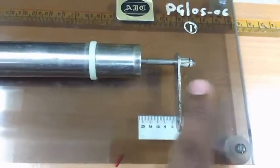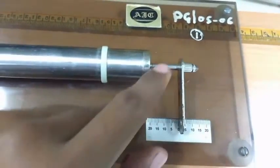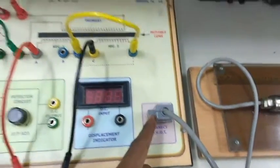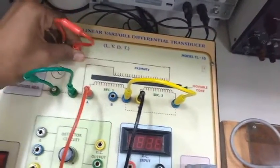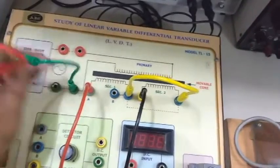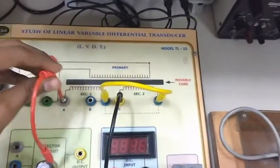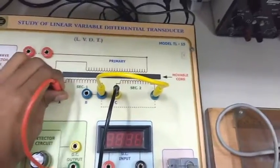Now this core is connected with the LVDT kit and the rest you can see the connecting ports for AC and DC observation. So first for AC observation connection, let's see the connection for AC observation.